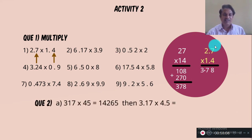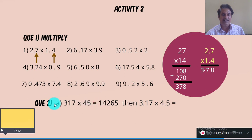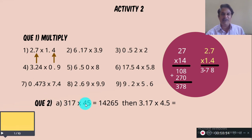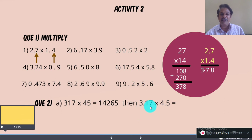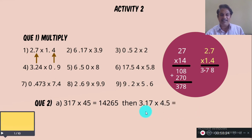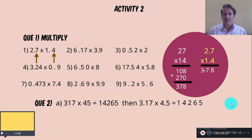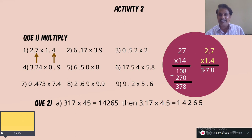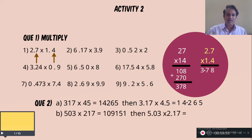Now question 2: 3.17 into 4.5. Here 317 is obtained after removing the point, and 14,265 is the product. In the multiplicand 3.17 there are two decimal places, and in the multiplier 4.5 there is one decimal place — so there are three decimal places. Place the point so that there are three decimal places in the answer.